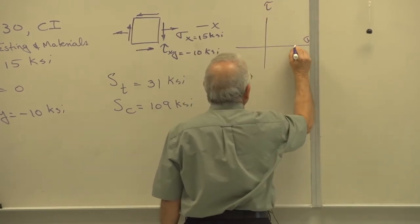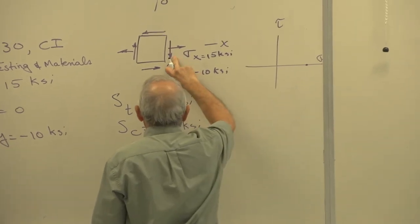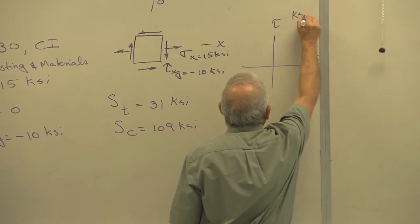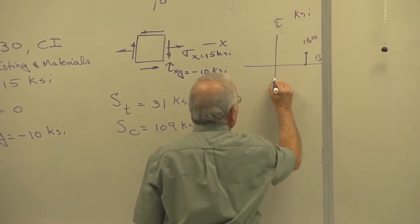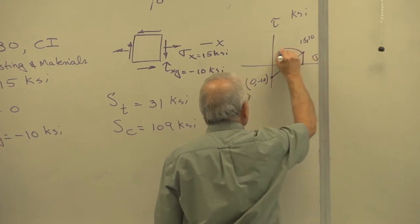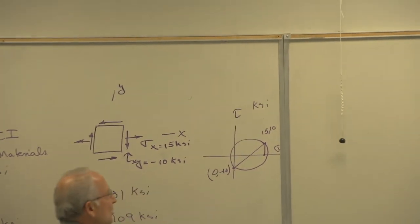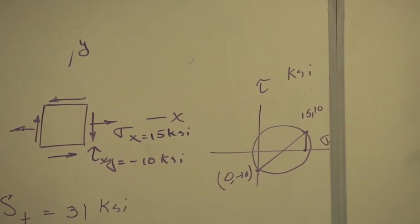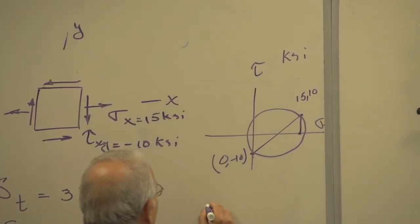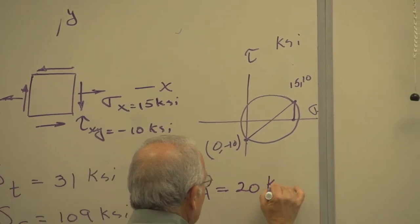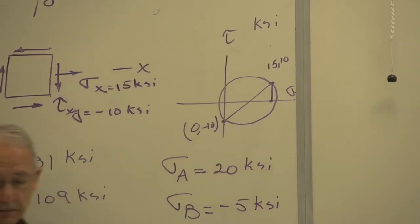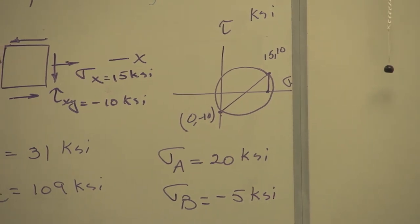I have sigma X as 15 KSI. Using Mohr's circle convention, that point is at 15 and positive 10, and on the other surface 0 and minus 10. That's a diameter of Mohr's circle. If you calculate the values — this is a simple Mohr's circle case — sigma A equals 20 KSI and sigma B equals minus 5 KSI. So now we have the principal stresses.